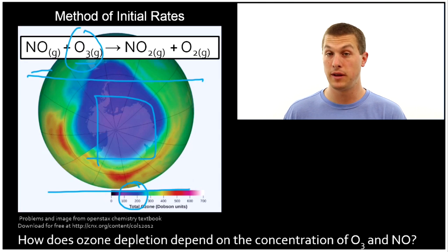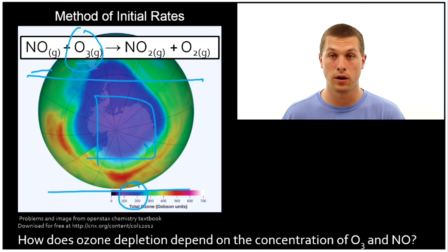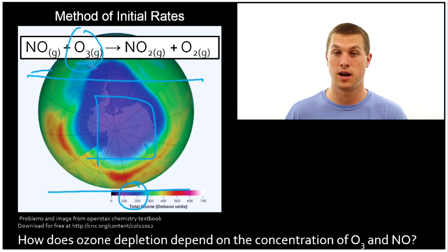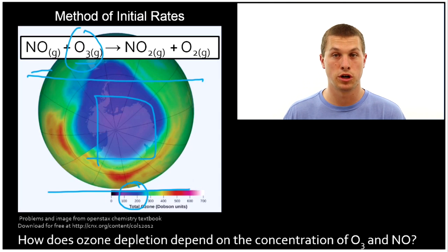We want to know how the rate of ozone depletion depends on the concentration of ozone and nitrogen monoxide. If it depends on the concentration of nitrogen monoxide to the third power, that's bad because increasing the concentration of nitrogen monoxide would cause ozone depletion to occur much faster.